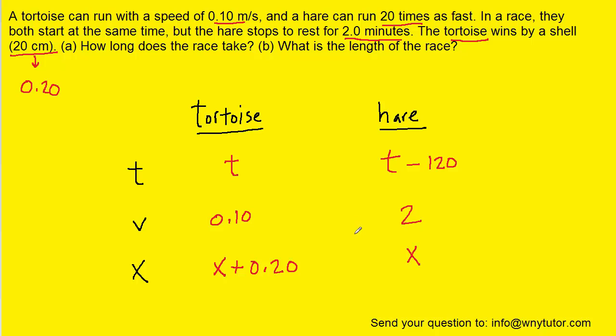Now after setting up this table, we want to consider one of the equations we learned from this chapter. And that equation looks like the following: we know that delta x is equal to the initial speed of an object multiplied by its time, plus one-half times the acceleration times time squared. The question does not mention anything about these objects actually accelerating, so it is safe to say that the acceleration in this question is equal to zero.